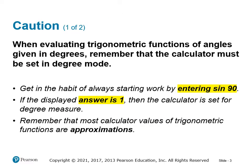When evaluating trig functions of angles given in degrees, the calculator must be set into degree mode. A good habit is to always start by entering the sine of 90 — if you get 1, you know your calculator is set for degree measure. Remember that most calculator values of trig functions are approximations, not actual numbers, because the long decimal continues and we round it.